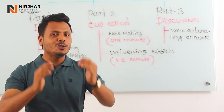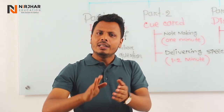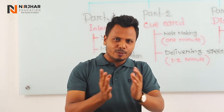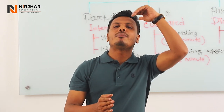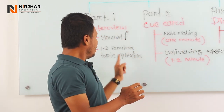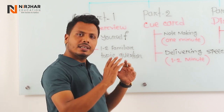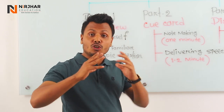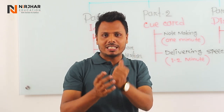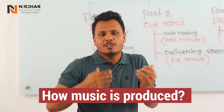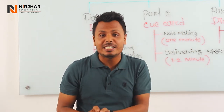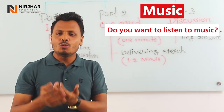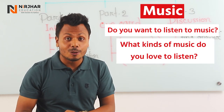You will typically be asked about 2 to 3 familiar topic questions. For example, questions about music — like 'Do you love to listen to music?' and 'What kinds of music do you love to listen to?' These are the types of questions asked in Part 1.